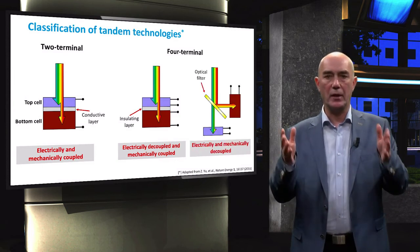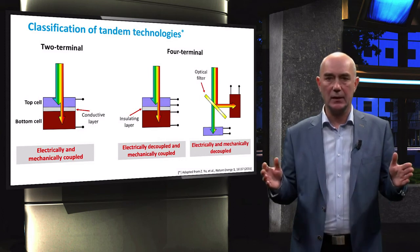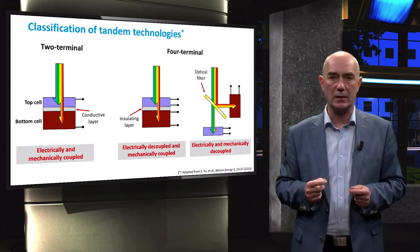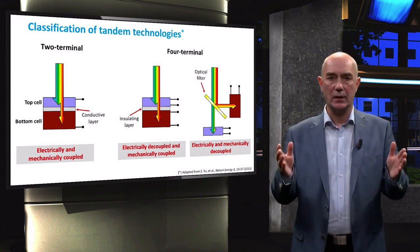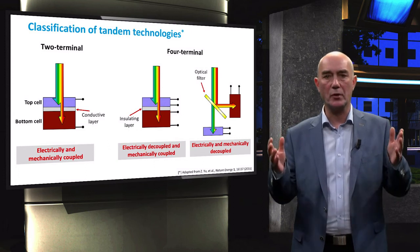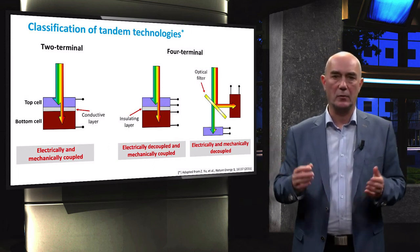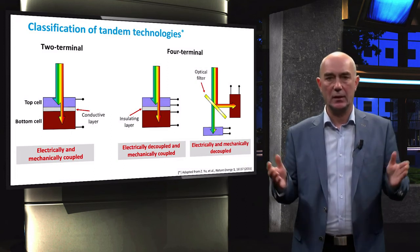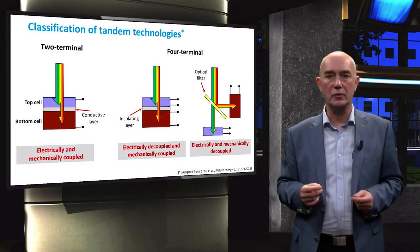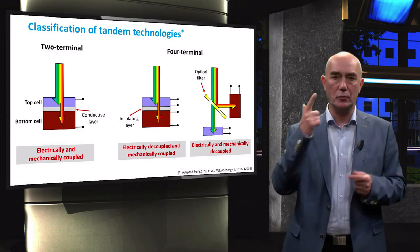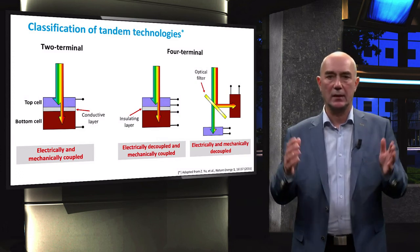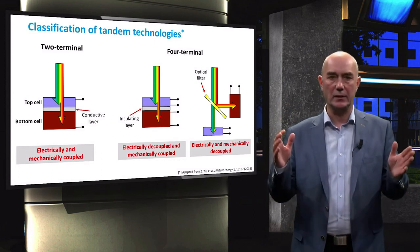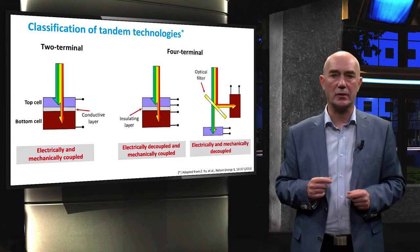We can further decouple individual cells mechanically so that we have more freedom in fabrication of tandem cells. As you can imagine, these last two configurations are more complicated to use when connecting a solar cell to an external circuit. Therefore, in practice, we rarely use anything aside from the two-terminal device. This means that we almost always have to consider current matching when designing multi-junction solar cells.